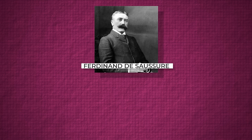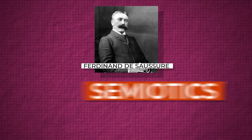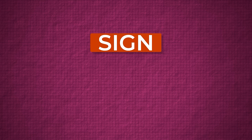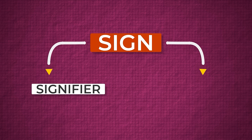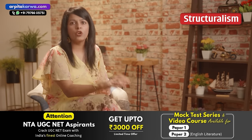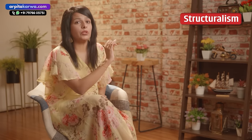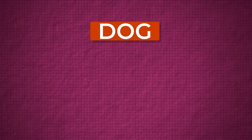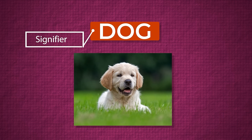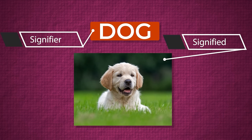Ferdinand de Saussure is the most important theorist of Structuralism. He gave the theory of semiotics — the study of signs. Every word or image we see is a sign. Every sign is made up of two things: the signifier and the signified. The signifier is the word or image, and the signified is the concept that strikes our brain when we look at the word or image. For example, if I say the word 'dog,' all of us will have a different image of a dog in our brain. If I love pugs, I'll think of a pug. You might think of a street dog. The signifier is the word 'dog' and the signified is the image developed in our brain.